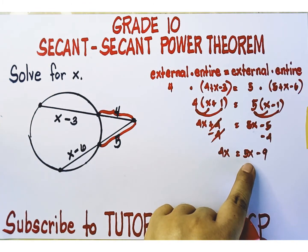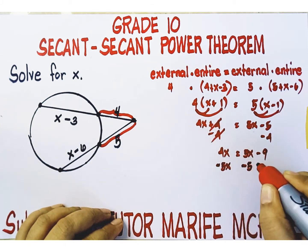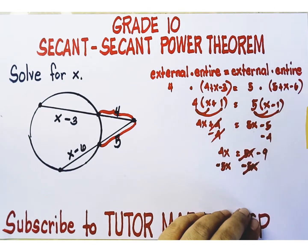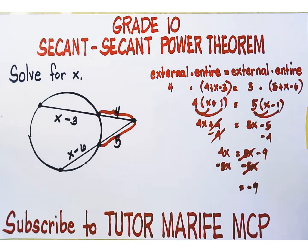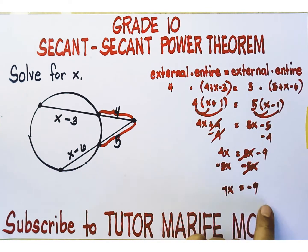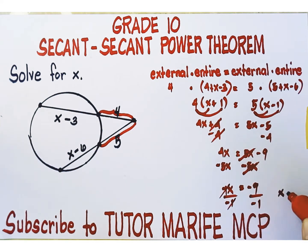Eliminate the x term on the right side using the subtraction property of equality — subtract five x from both sides. The right side becomes negative nine, and the left side becomes four x minus five x, or negative x. The numerical coefficient of negative x is negative one, so divide both sides by negative one using the division property of equality. X is isolated on the left side, and its value is negative nine divided by negative one, which is nine.